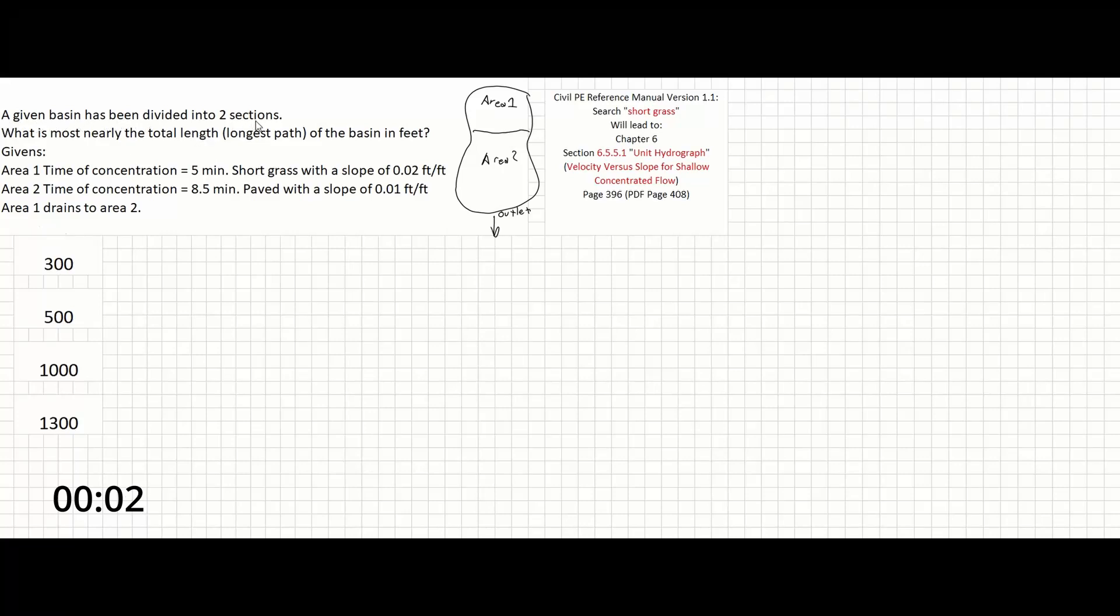A given basin has been divided into two sections. What is most nearly the total length or longest path of the basin in feet? Givens: Area 1's time of concentration is 5 minutes, short grass with a slope of 0.02 feet per feet. Area 2's time of concentration is 8.5 minutes, paved with a slope of 0.01 feet per feet. Area 1 drains to area 2.